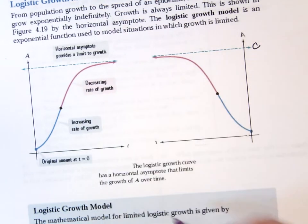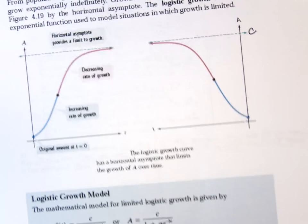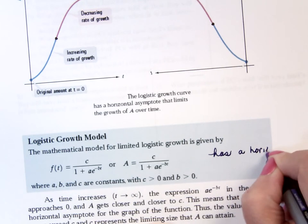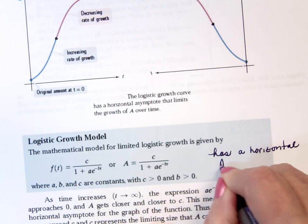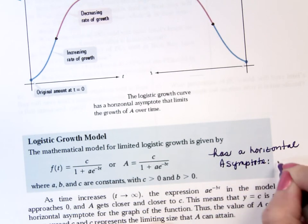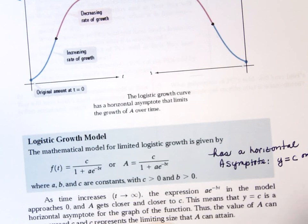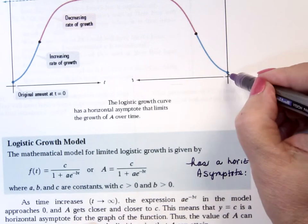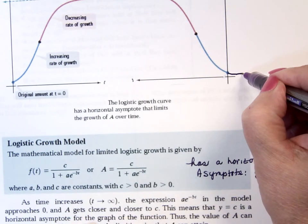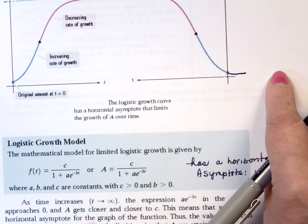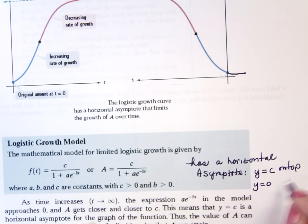But the logistical model has a horizontal asymptote. So we can actually say that this guy has a horizontal asymptote. And it is y equals c on the top. He has two horizontal asymptotes. What's the other horizontal asymptote? What happens here?